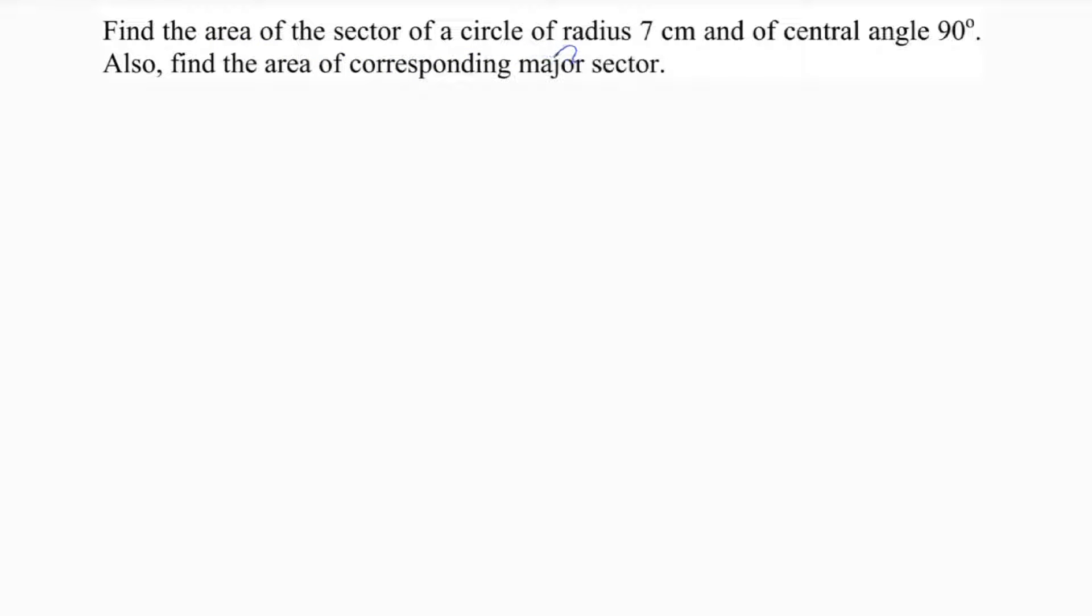Find the area of the sector of a circle of radius 7 centimeters and of central angle 90 degrees. Also find the area of the corresponding major sector.